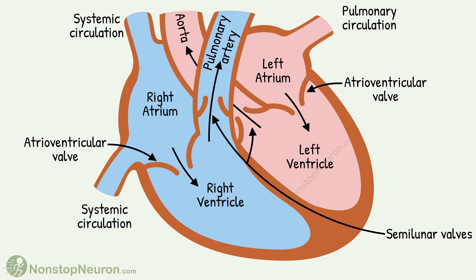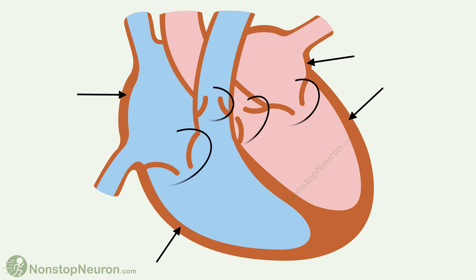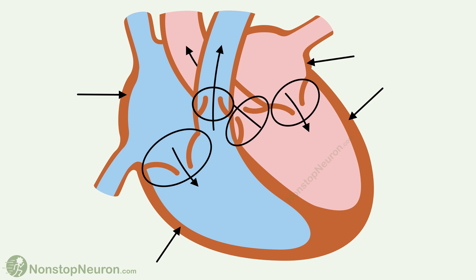So this was some basic anatomy. Now let's see the cardiac cycle. The cardiac cycle is a sequence of events that take place in the heart during each heartbeat. The fundamental events to understand in the cardiac cycle are the movement of chambers, the movement of valves, and the flow of blood as a result of these movements.